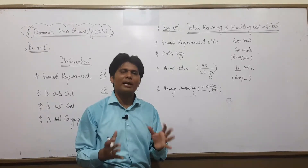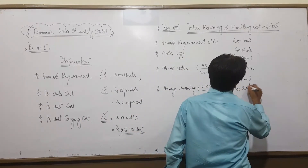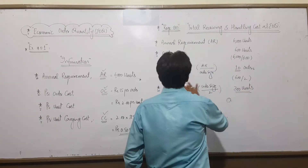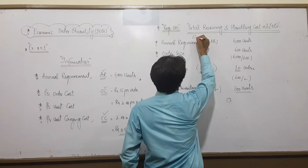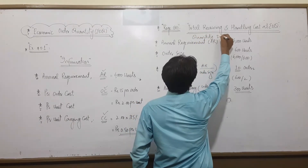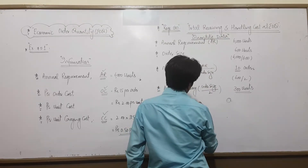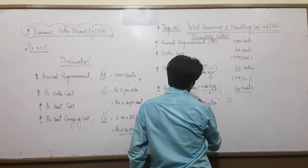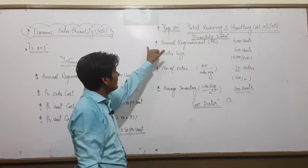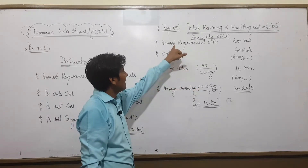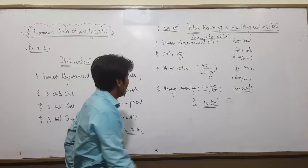The data so far is all quantities: units, units, orders, units. You can write a heading 'Quantity Data' here. Now under 'Cost Data': the first cost is Ordering Cost = Number of Orders × OC (per order cost) = 10 × ₹15 = ₹150. Then add Carrying Cost = Average Inventory × CC = 300 × ₹0.50 = ₹150.